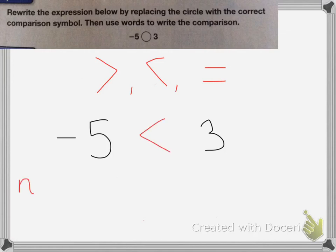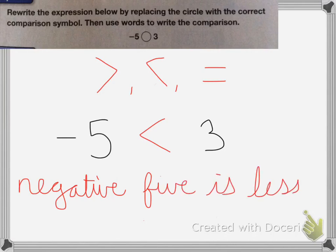And then to write it out, I would write out -5 is less than 3. That would be writing it in words.